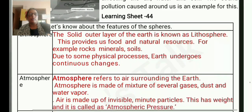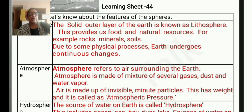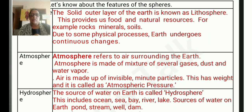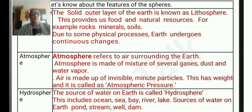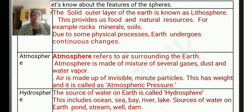Next one is the atmosphere. Atmosphere refers to the air surrounding the earth. It is made up of a mixture of several gases, dust, and water vapor. Air is made up of invisible minute particles. This has weight and is called atmospheric pressure.